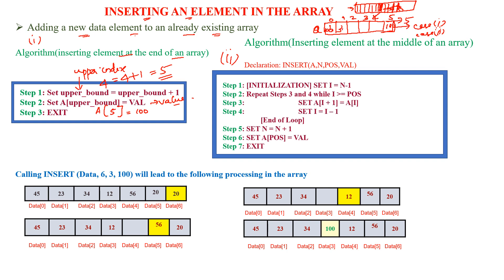Let us consider the existing elements are 20, 30, 40, 50, and 60. Now 100 is inserted to the end of the array. Using the same example, we will now go on to the second case.